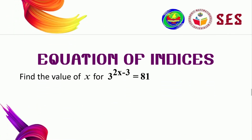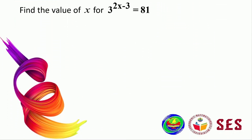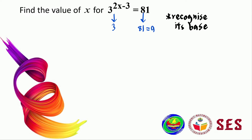Let's look at the first example. We are given 3 to the power of 2x minus 3 equals to 81. The first thing to do is to recognize its base. On the left side we have base 3. On the right side we have 81. We know that 81 is equal to 9 squared, and 9 is equal to 3 squared. Therefore, we can rewrite the equation as 3 to the power of 2x minus 3 equals to 3 to the power of 2.